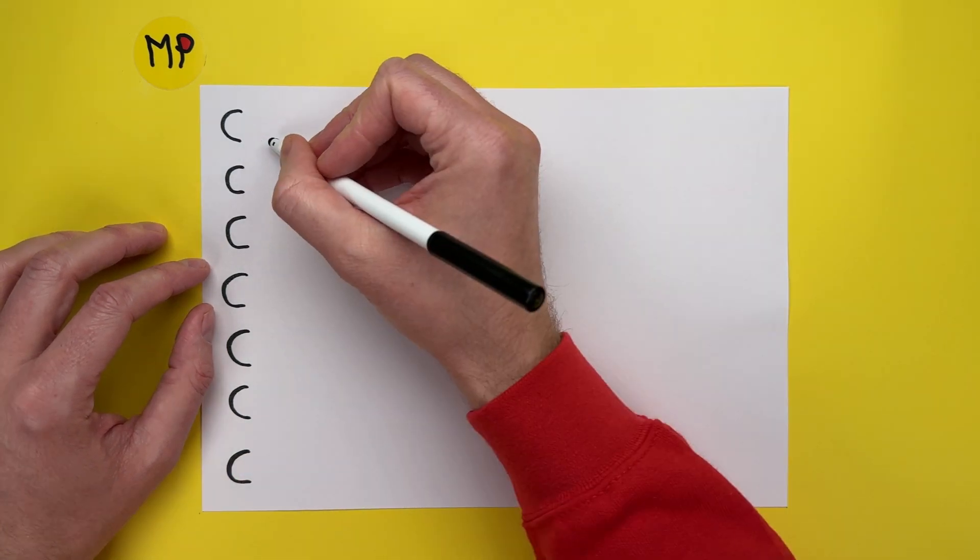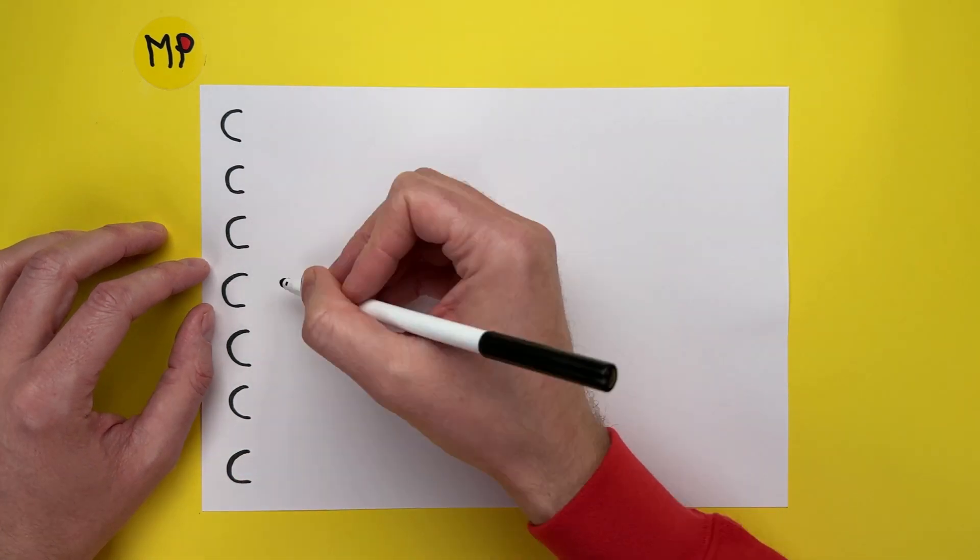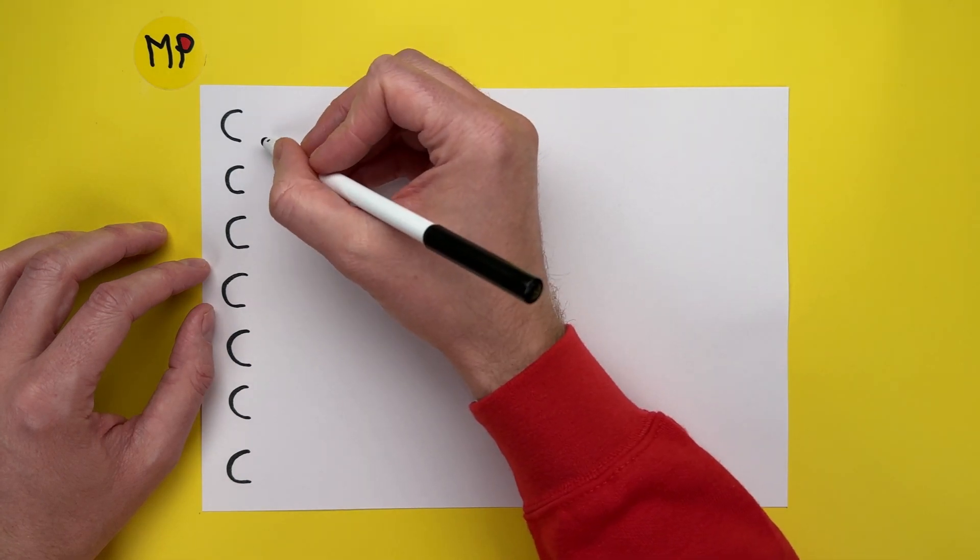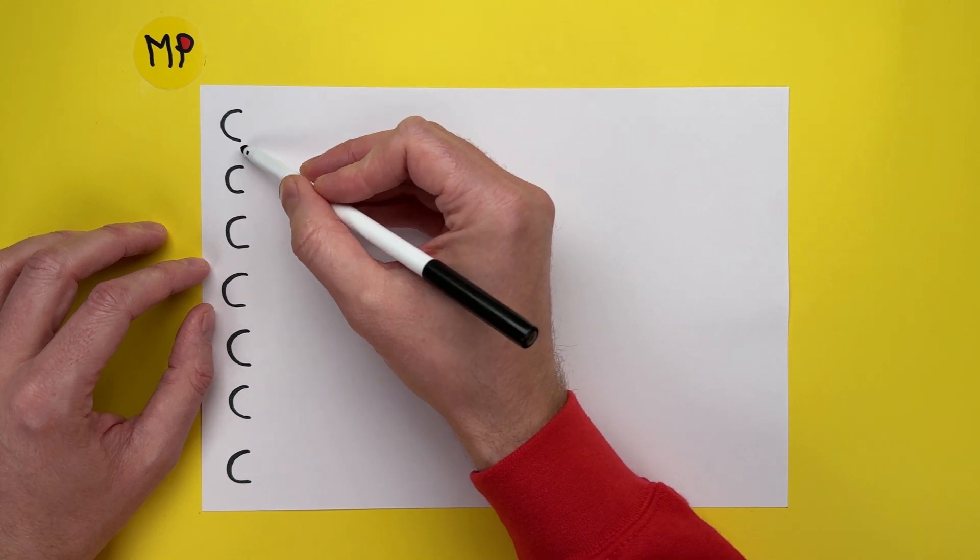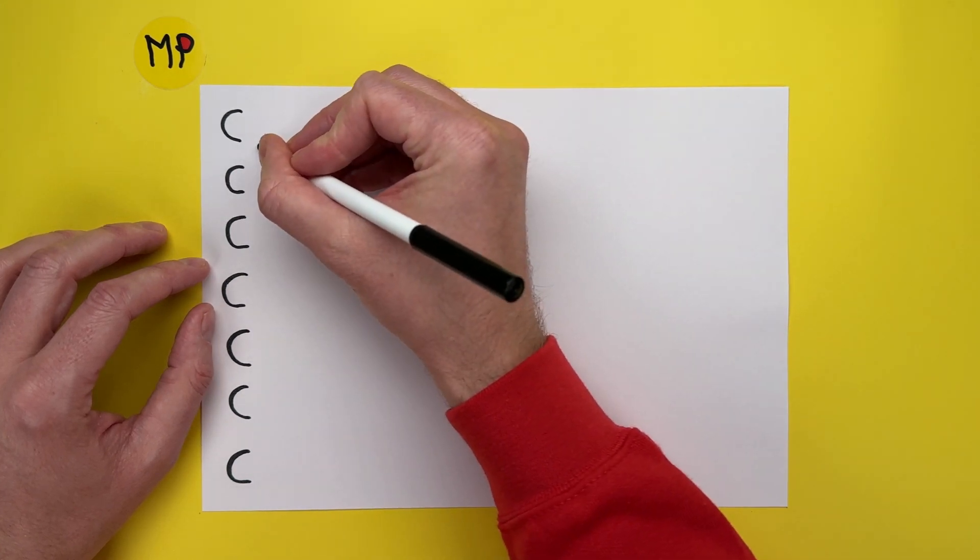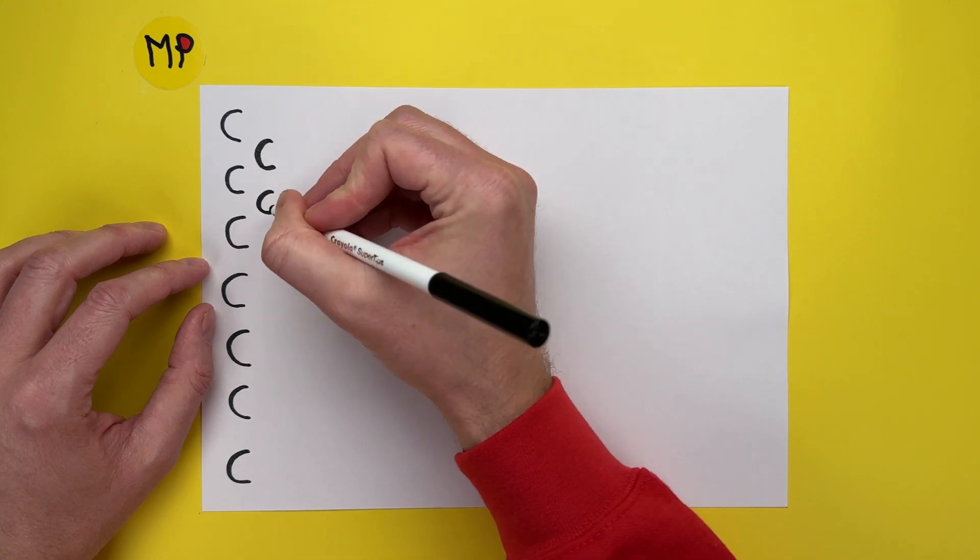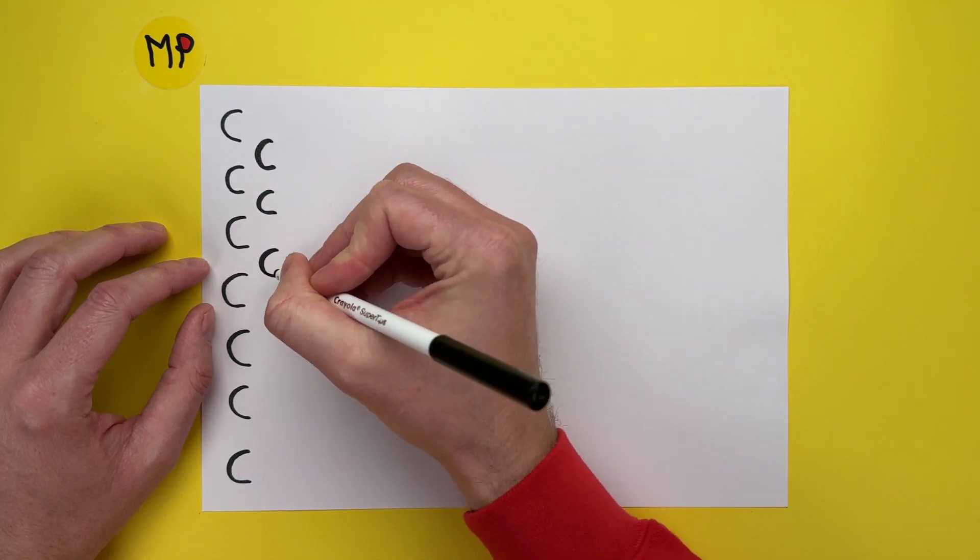What we're then going to do is draw another line or column of C's. But this one is sort of going to go in the gap. So if I show you here, there we are, look, it sort of goes in the gap of where the other C's are.